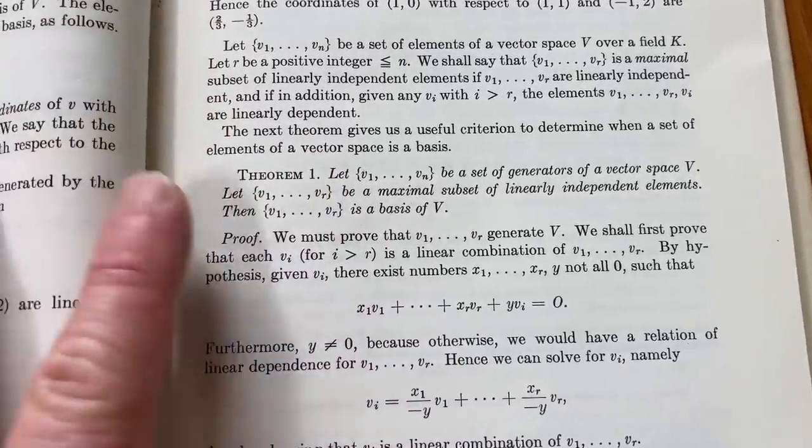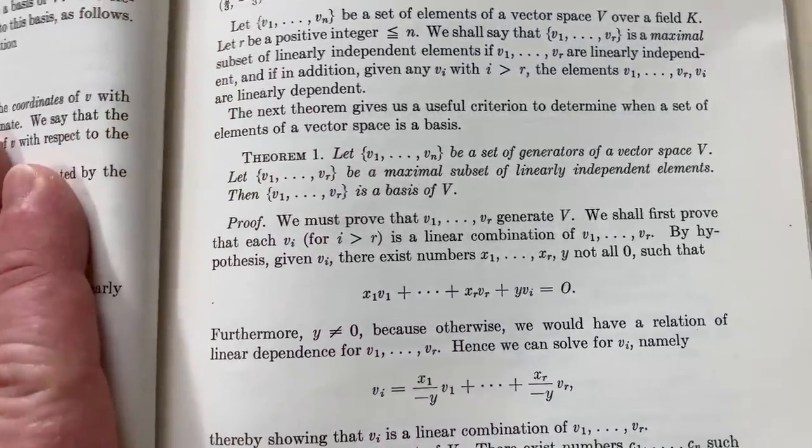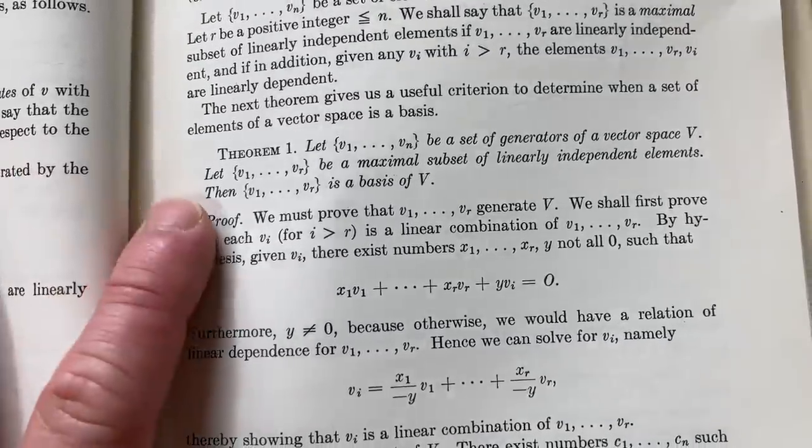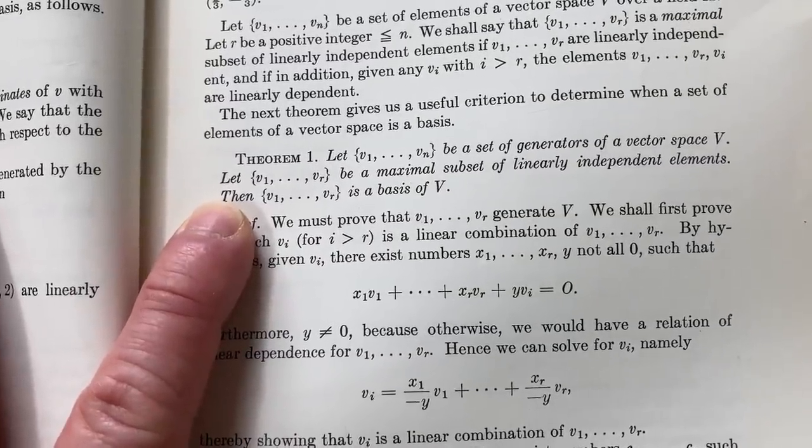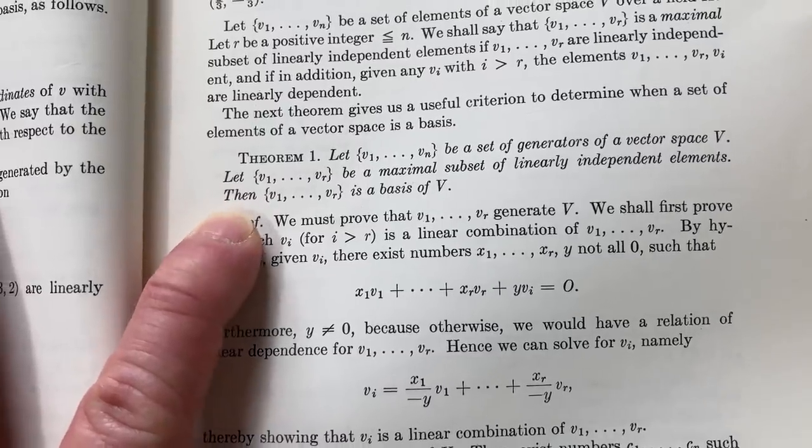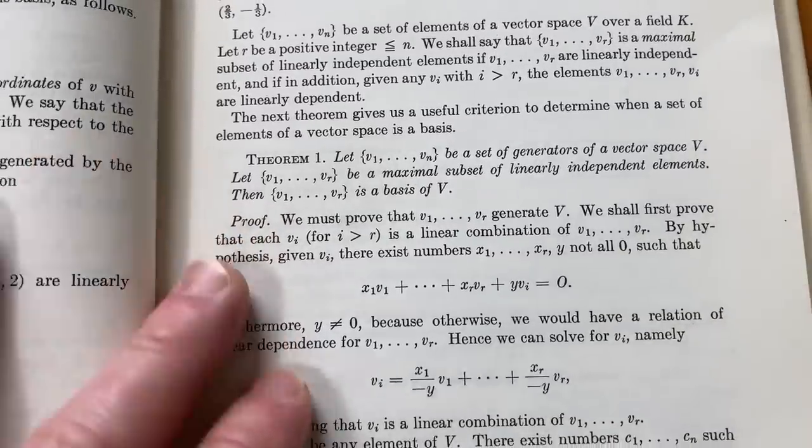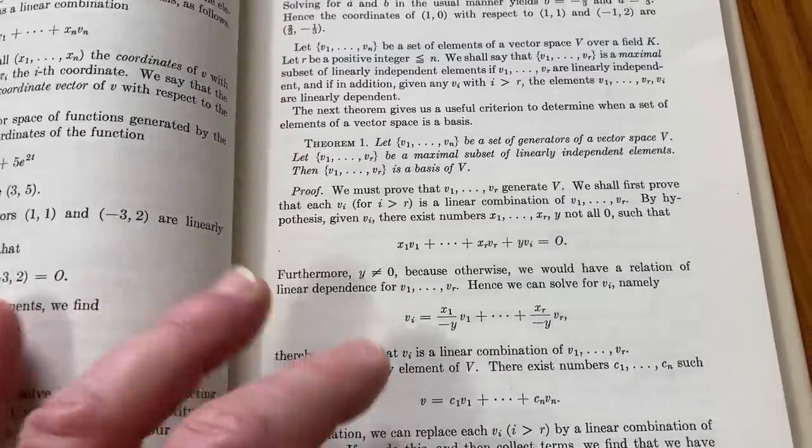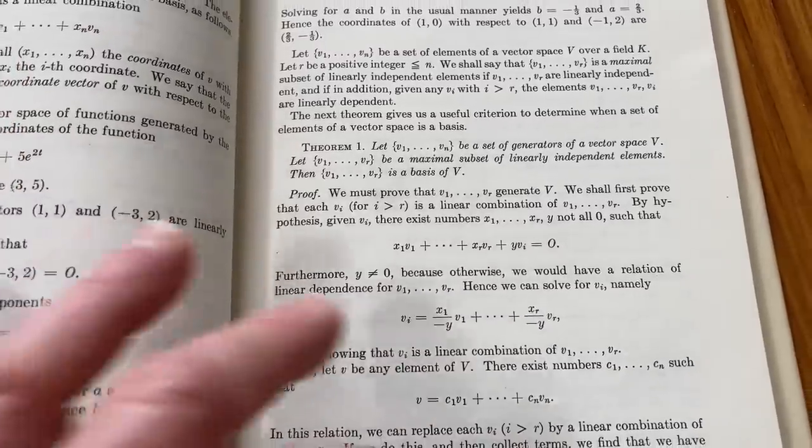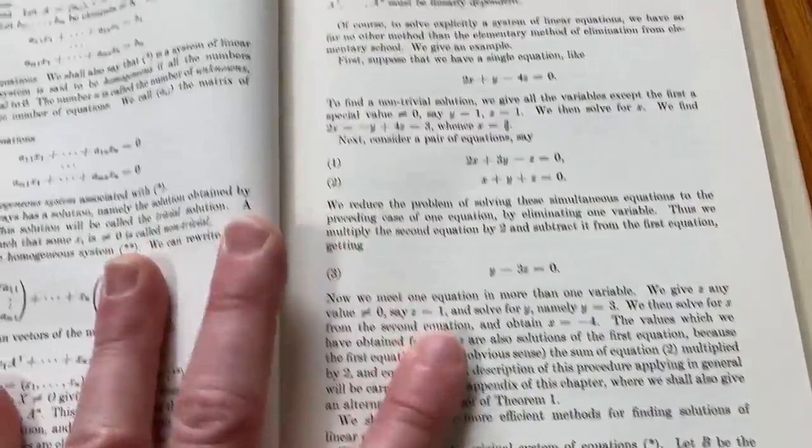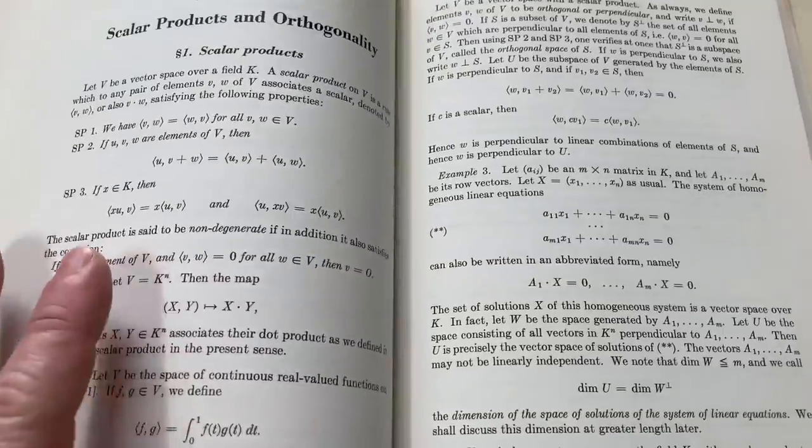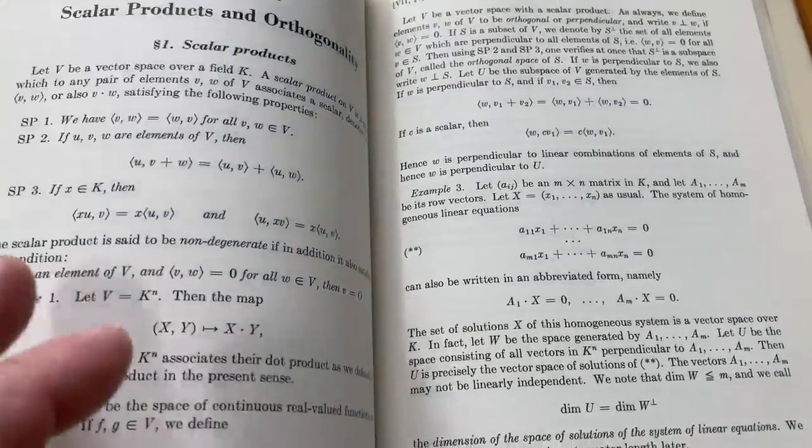Here's an example of a really good proof in this book that I think is really clear and well-written compared to other books. It says, let V_1 through V_n be a set of generators of a vector space V. And then let V_1 through V_r be a maximal subset of linearly independent elements. Then it's actually a basis of V. And the proof is really quite clean. That's something that comes up again and again in this book. The proofs are just clean. I feel like they're written in a way that I can understand them compared to a lot of other books. And that's really what I like about this book, just the way it's written. Something about the way Lang presents the topics and defines things makes it really clear.